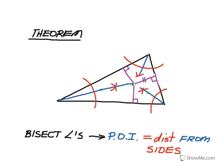We can inscribe a circle in this triangle using that point of intersection as the center of the circle.